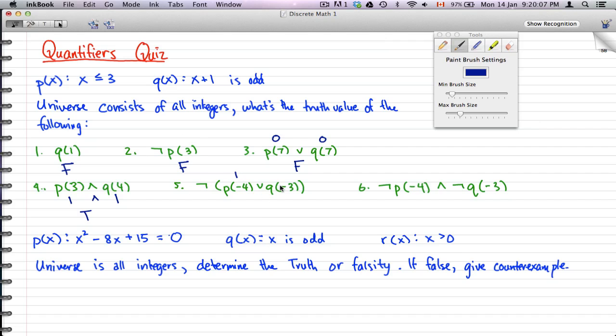p(-4), now negative 4 is less than 3, that is a 1. And q(-3), well that is not odd, that is even. So 1 or 0, so 1 or 0 will give us a 1 because it's or. Now so then that is true, but if we negate the truth, then we will get false.